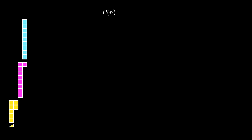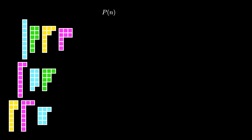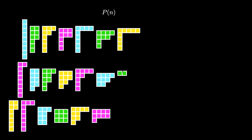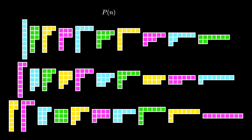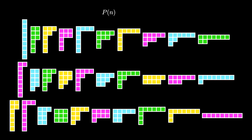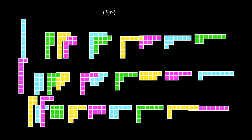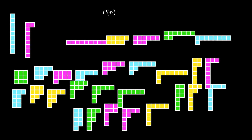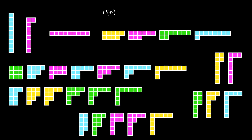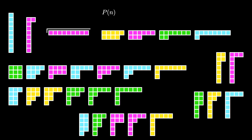If we're trying to compute p of n, we can list out all of the Young diagrams for n. In this case, we have n is 9, and here are all the partitions. A natural way to organize the partitions is to group them together with other partitions with the same number of parts, as we've done here.